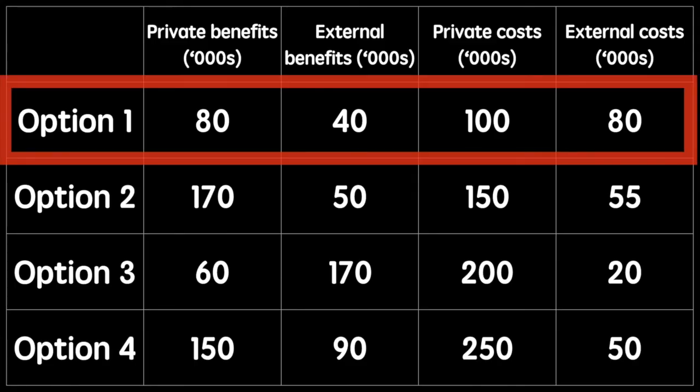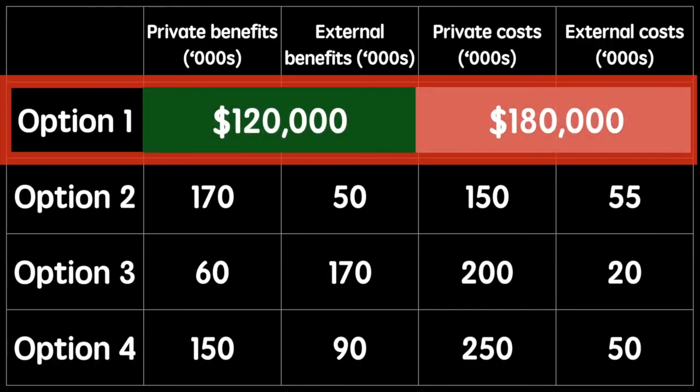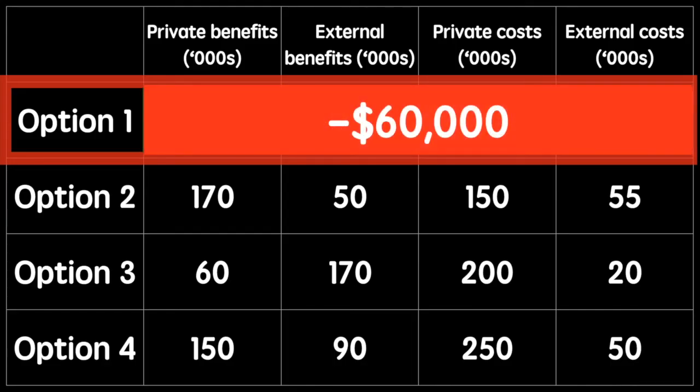Let's consider option one. The sum of the benefits is $120,000 and the value of the cost is $180,000. Since our costs are greater than our benefits, we run a net loss of $60,000.